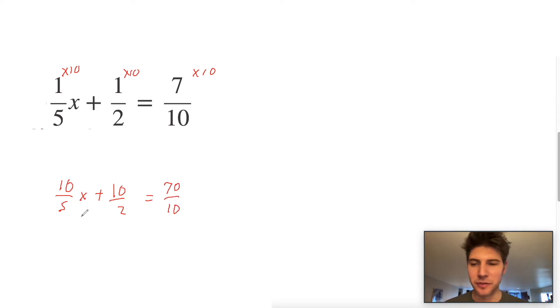And now we can simplify this. 10 over 5 is 2x plus 10 over 2, which is 5, and 70 divided by 10 is 7.